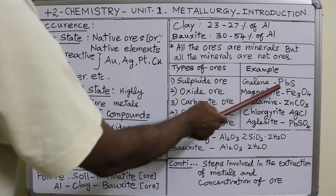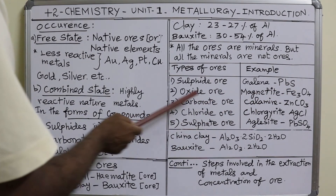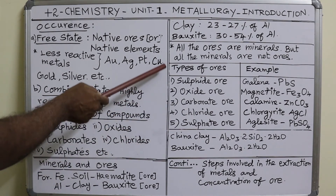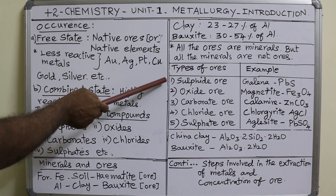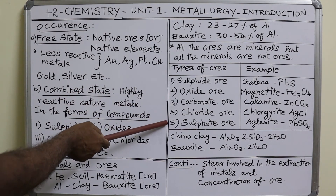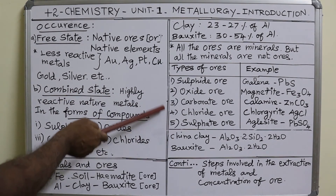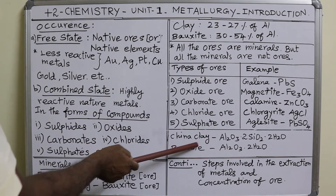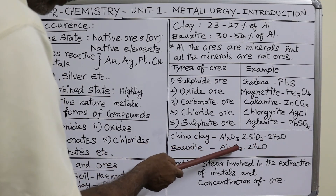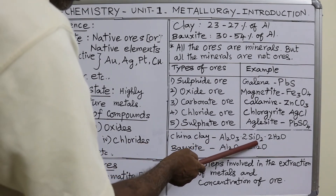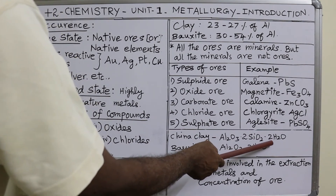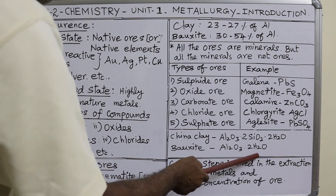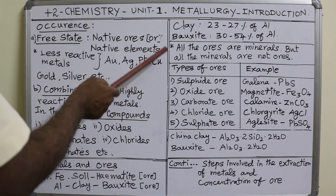Note that sulfide ores contain the element S, whereas sulfate ores contain the group SO₄ — these are different. Ores can be classified into these five types. In addition, the molecular formula of china clay is Al₂O₃·2SiO₂·2H₂O, where the H₂O is water of crystallization. The molecular formula of bauxite is Al₂O₃·2H₂O.